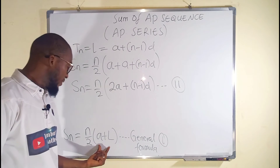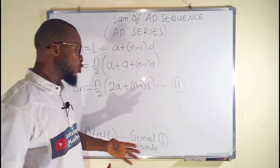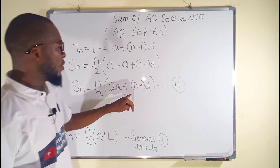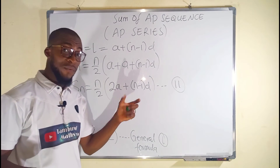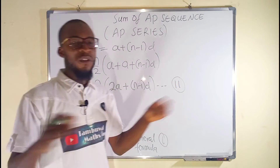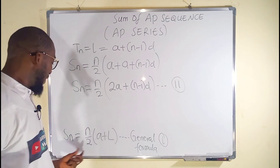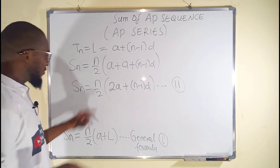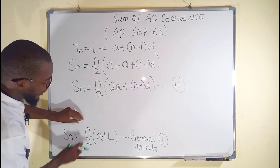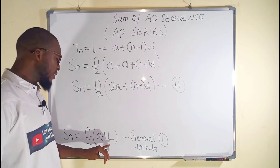The first formula is most useful when you are given the first and the last term. In certain cases where you are asked to sum particular terms within a sequence, you are free to use the second formula when the common difference is known. If you are only given the first and last term along with the sum, you can use the first formula to find the number of terms. Both formulas are very important — you can use them to find the sum of terms, the number of terms, or the last term.